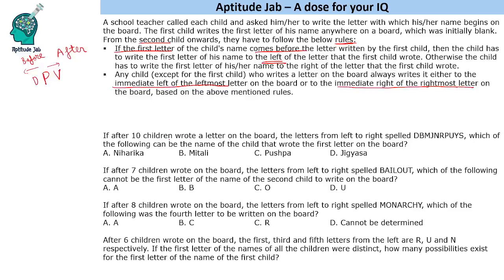The first question says: after 10 children wrote a letter on the board, the letters from left to right spell a given word — which of the following can be the name of the child that wrote the first letter? We need to find the first letter. If D is the first child, anything less than D should be on the left, but B comes before D so B should be on the left — which is not possible, so D is not the first child. If B is the first, then D written after it should be on the right, but D is on the left, so B is not possible either.